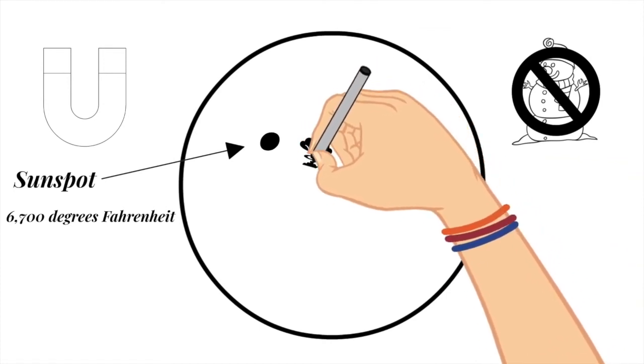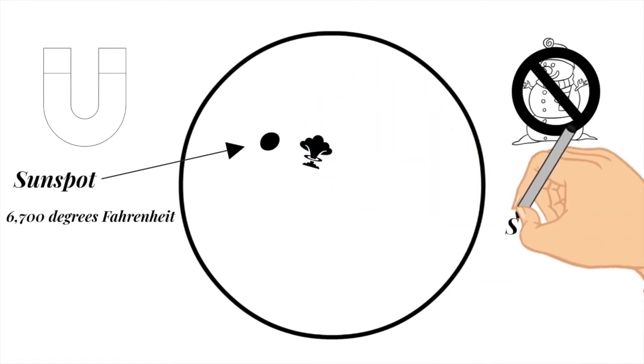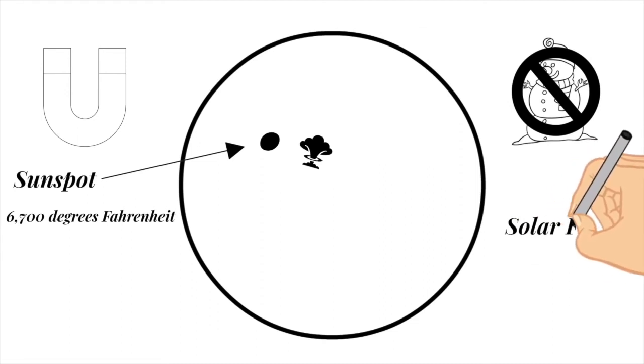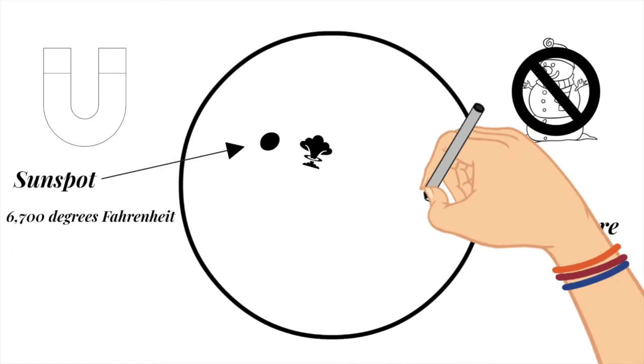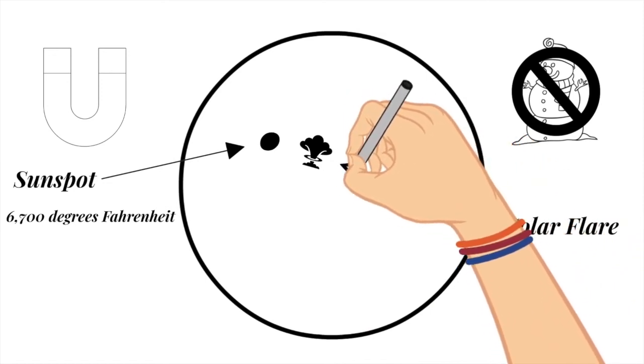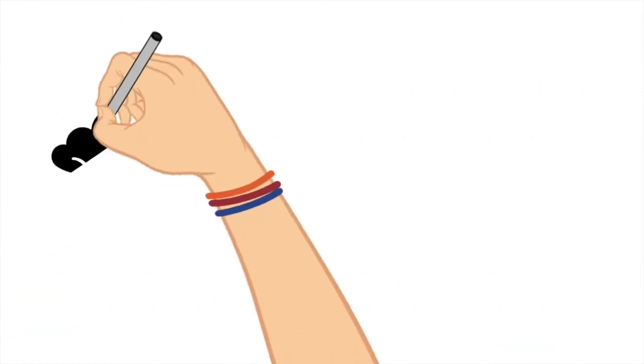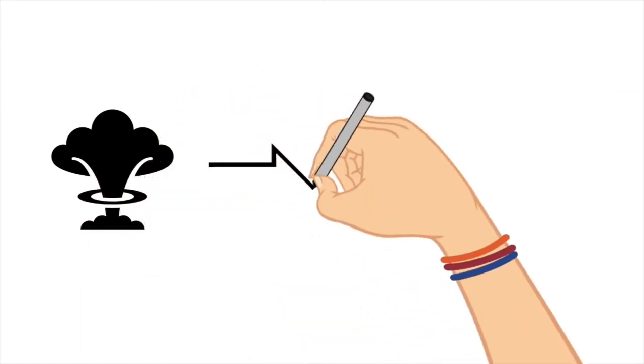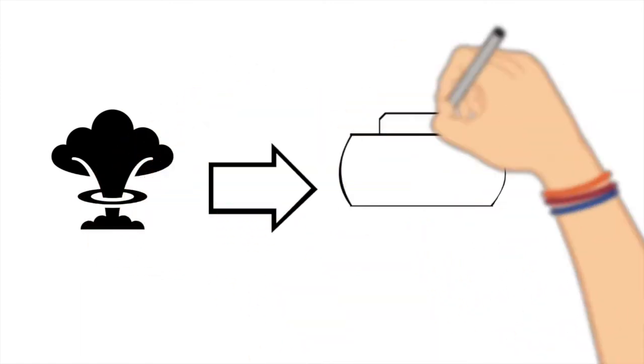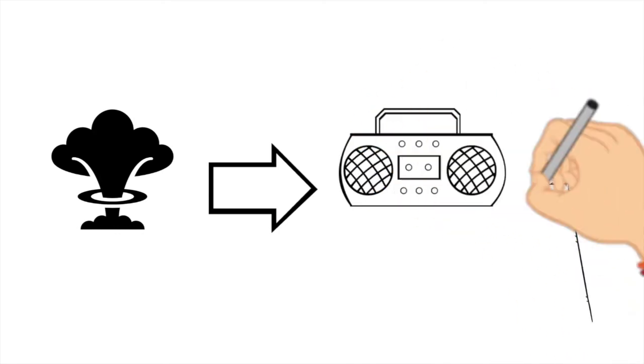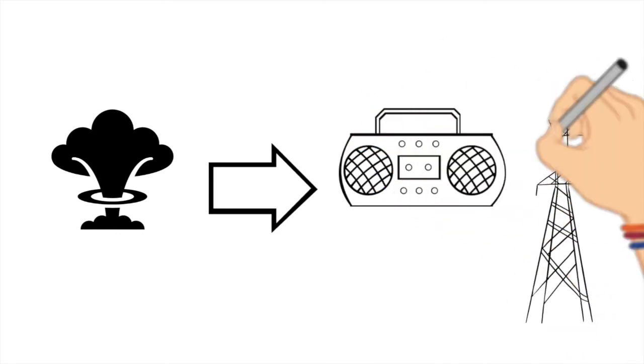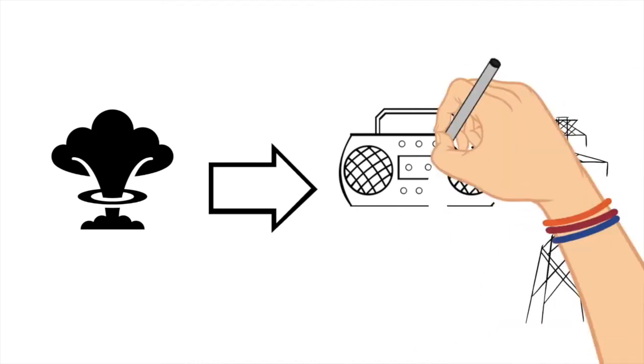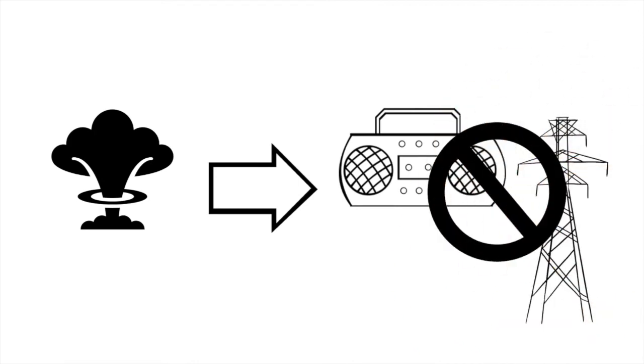On the other hand, solar flares are a sudden explosion of energy caused by tangling, crossing, or reorganizing of magnetic field lines near sunspots. Solar flares, if big enough, can cause electromagnetic disturbances on Earth as with radiofrequency and power line transmissions.